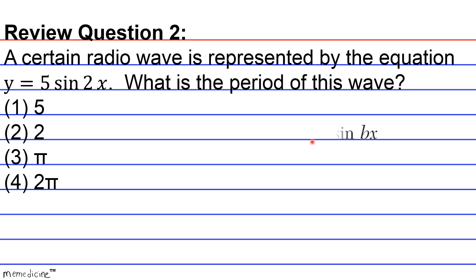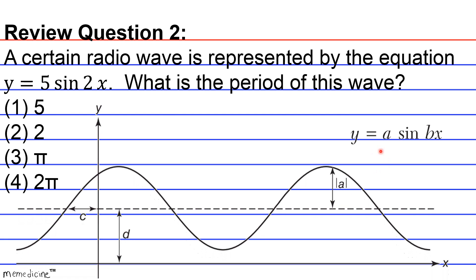In the equation y = a sin bx, A is the amplitude, but B is the frequency. And the period is given by 2π/b.